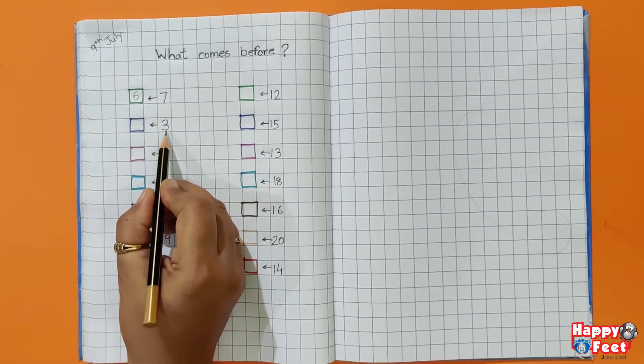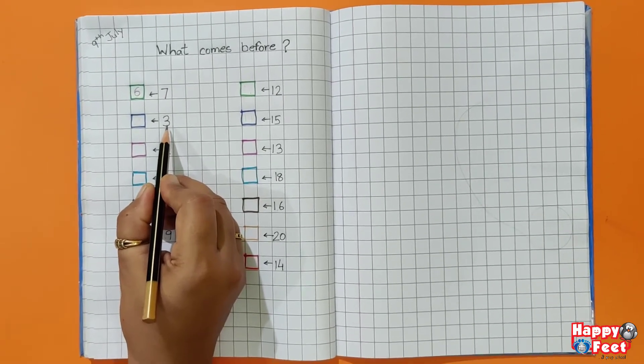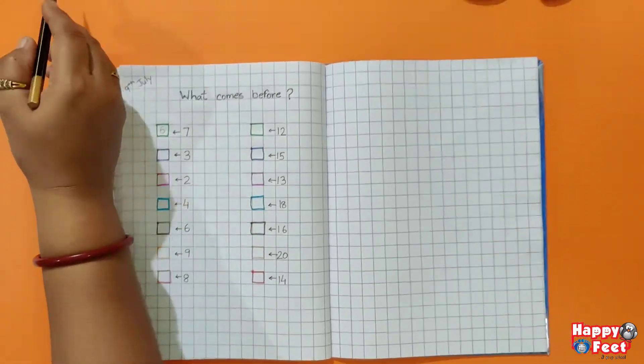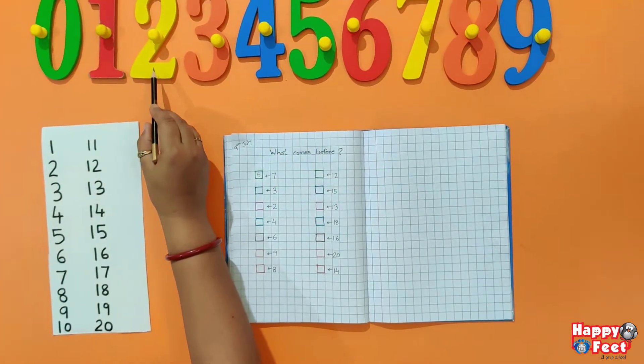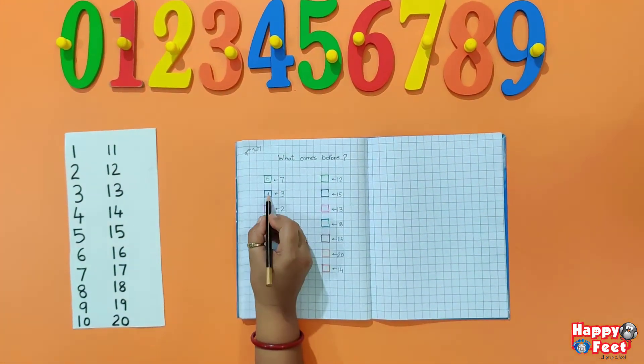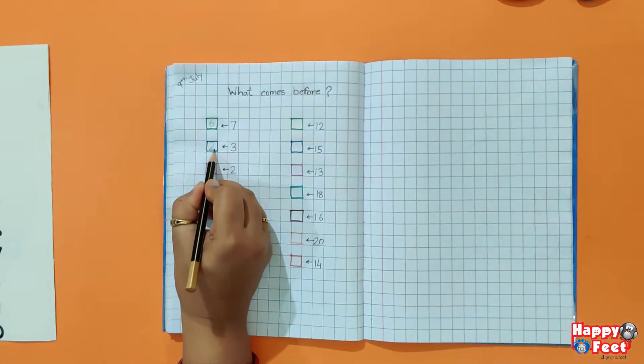Which number is this? This is 3. And what comes before 3? 2. We will write here 2.